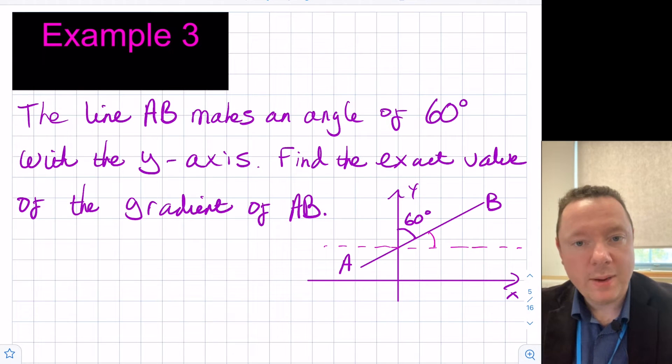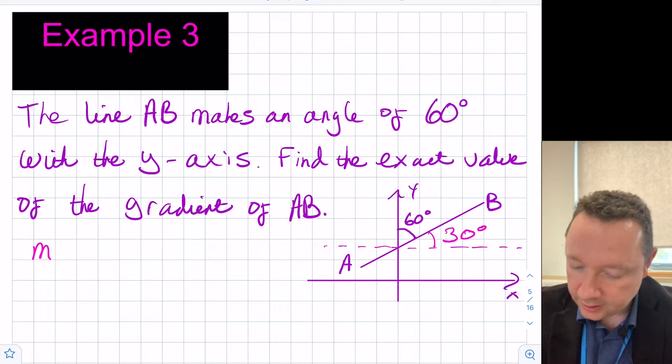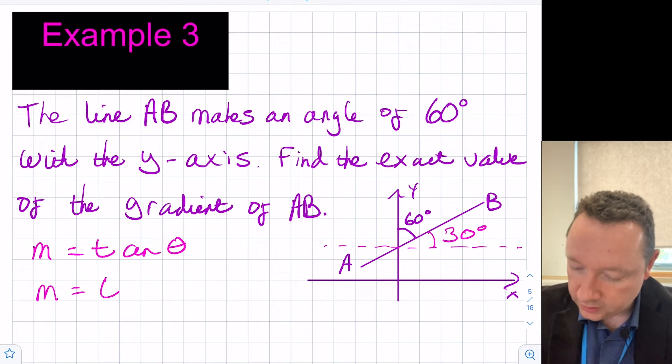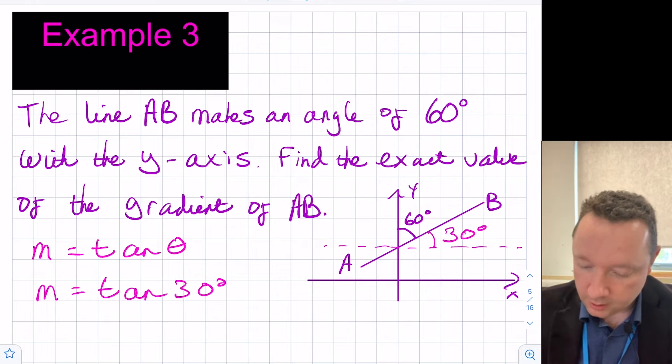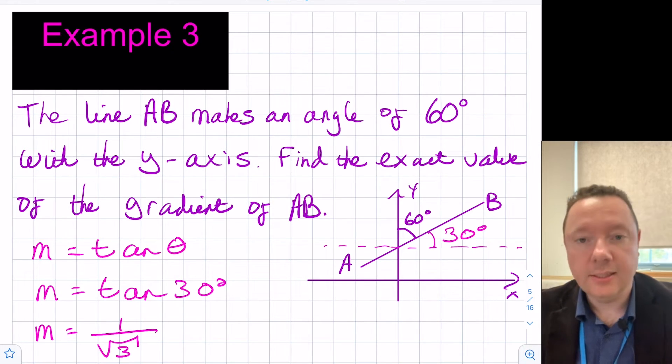This angle is going to be 90 - 60. That's going to be 30 degrees. We have to first work that out. We now know that since the gradient equals tan of the angle theta, then our gradient is equal to tan 30° and not tan 60°. The tan of 30° is an exact value. That is 1 over root 3. So our gradient is just 1/√3 as an exact value.